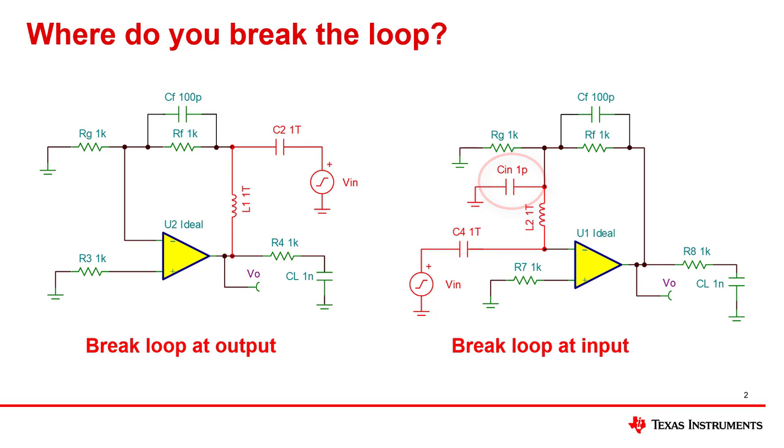One shortcoming of this method is that any components connected to the amplifier's non-inverting input are effectively part of the feedback network as they connect via the amplifier input capacitance. However, this part of the feedback network is not disconnected during the analysis. Thus, the amplifier is not truly open-loop during the open-loop analysis.